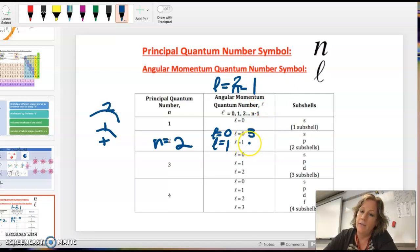Then I would have the P sublevel, which is those dumbbells. When I get to N equals 4, for example, L equals, the biggest L value is N minus 1, which would be 4 minus 1, which is 3.